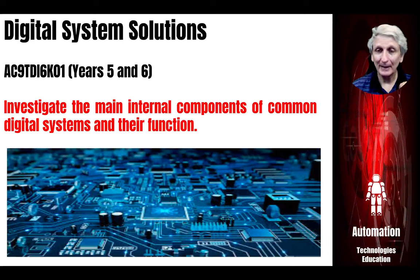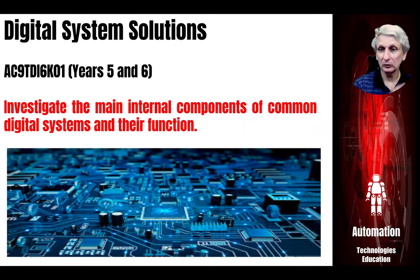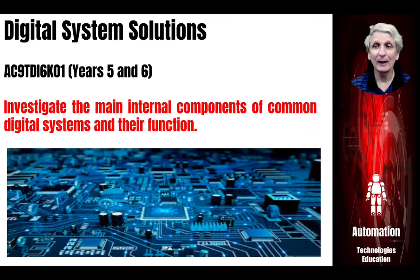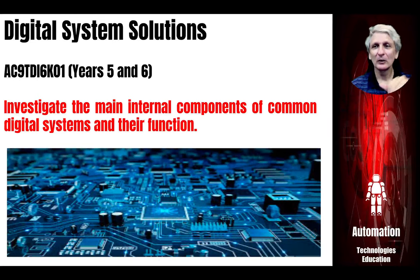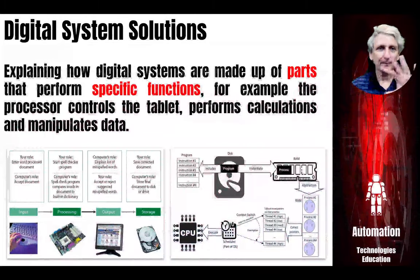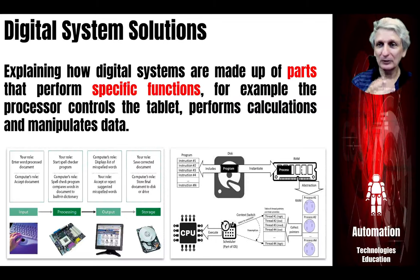It's important when developing solutions to problems that students understand how these devices work — they may want to change how they work, suggest improvements, or understand that a device won't do what they want and they need to search for another device. In order to do that, they need to understand at a reasonable level how the devices actually work. One approach is looking at how digital systems are made up of parts that perform specific functions — for example, how the computer processor, the central processing unit (CPU), controls how a tablet performs calculations and manipulates data.